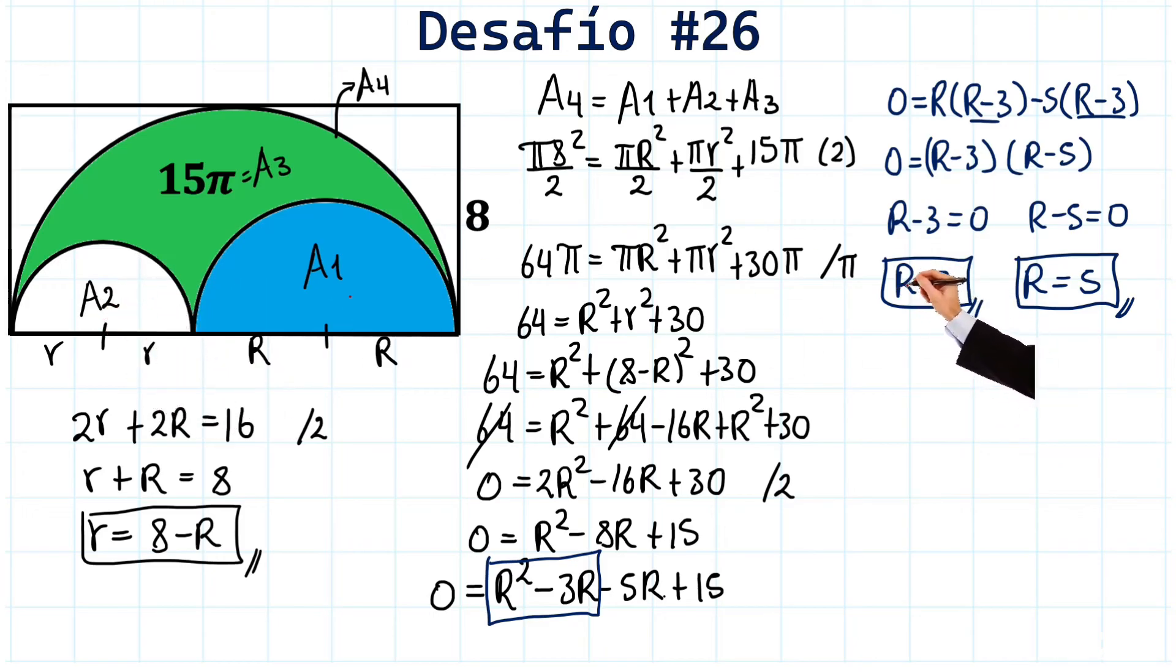If we consider that capital R is equal to 3 and replace it here, we get that lowercase r is equal to 8 minus 3, which gives us 5. And notice, lowercase r would be larger than capital R, so this solution doesn't work for us. And the only one that works is this one here.